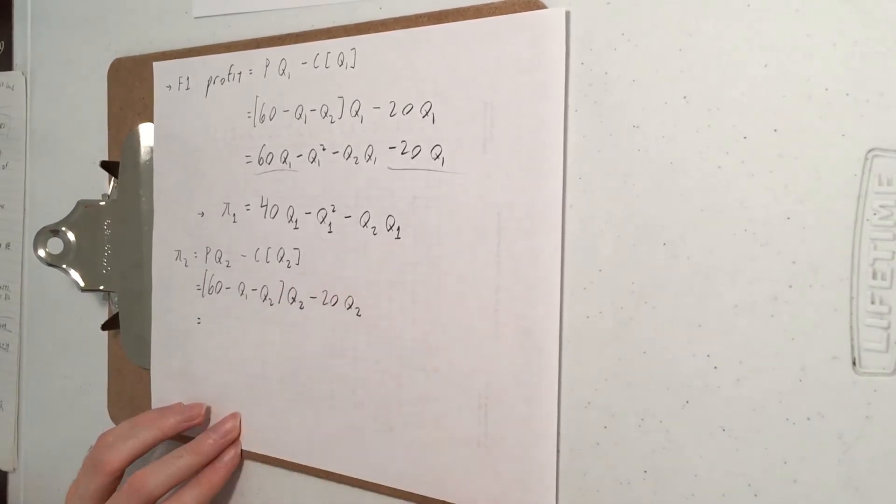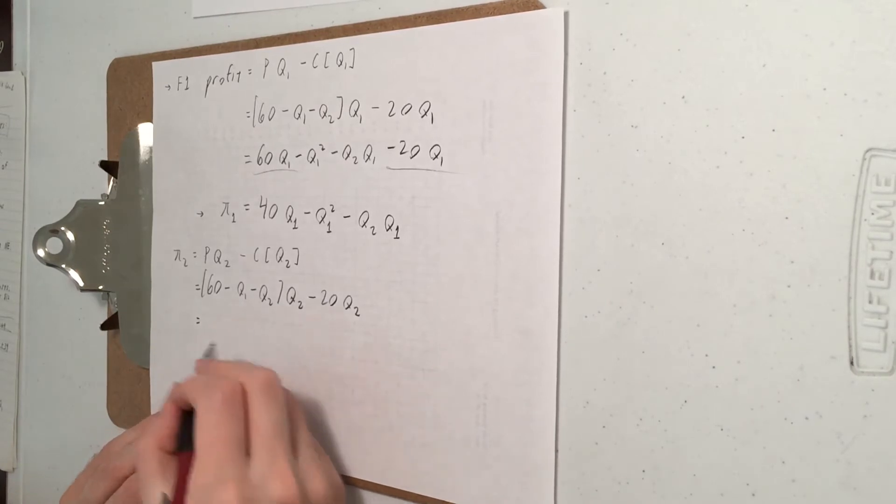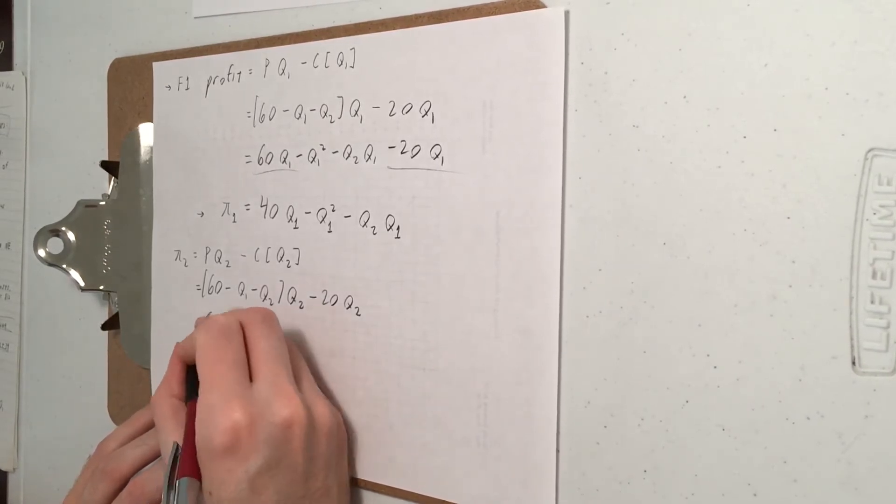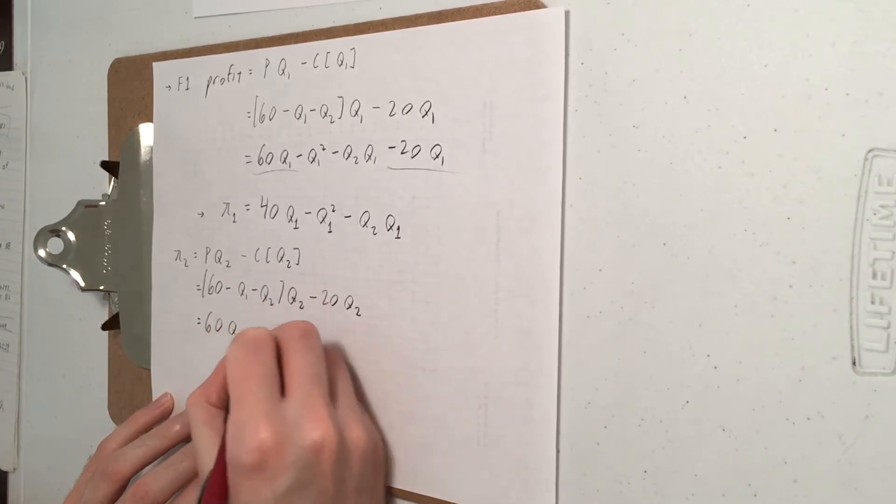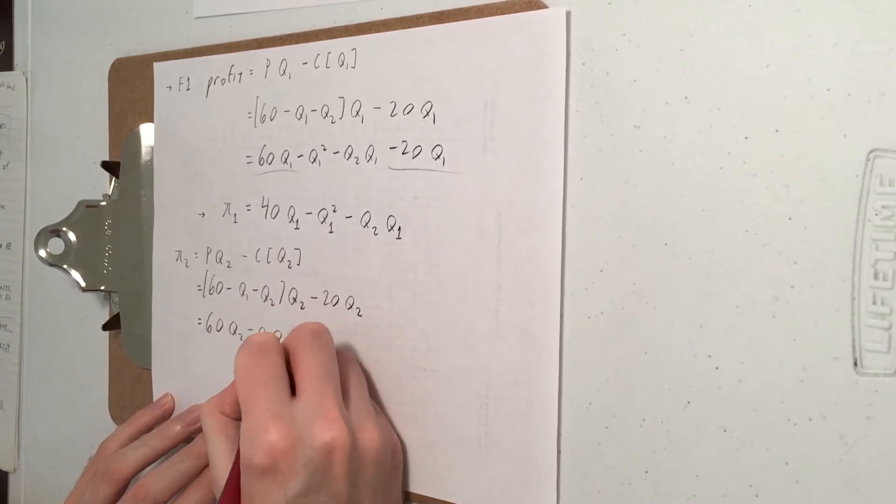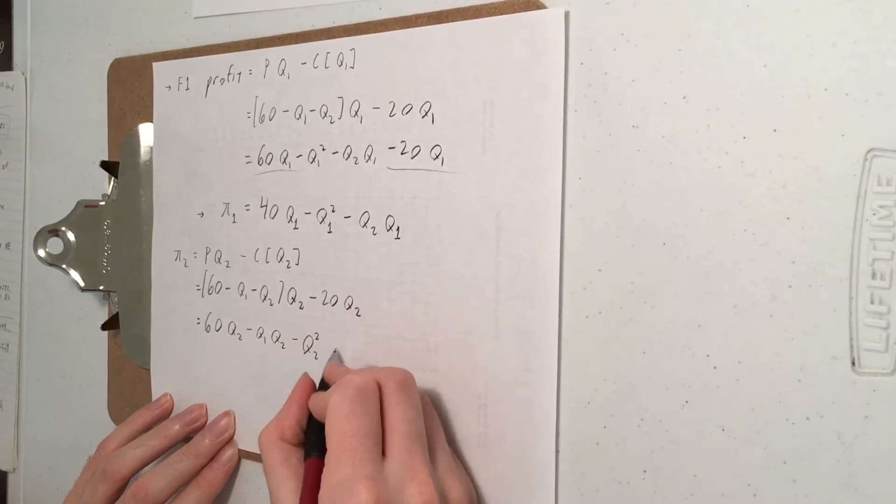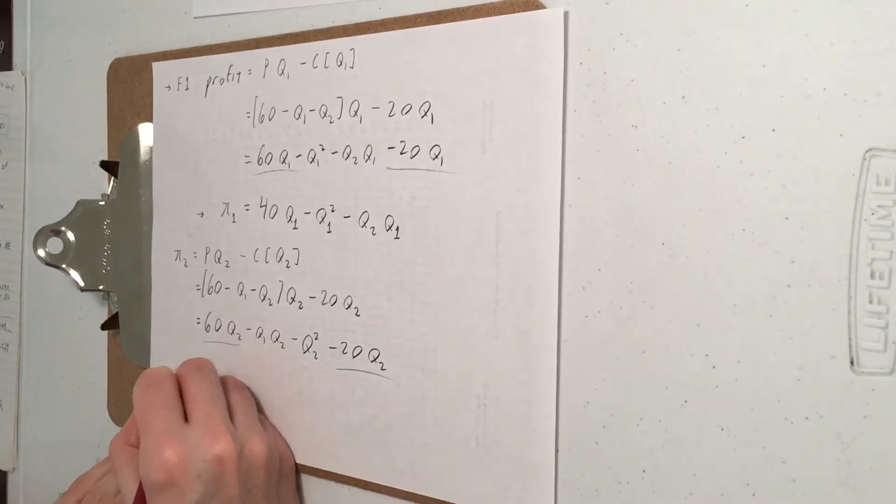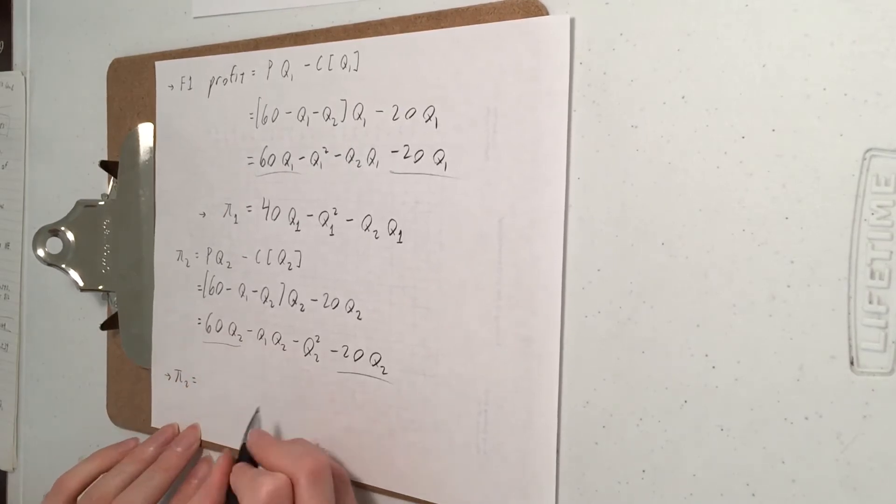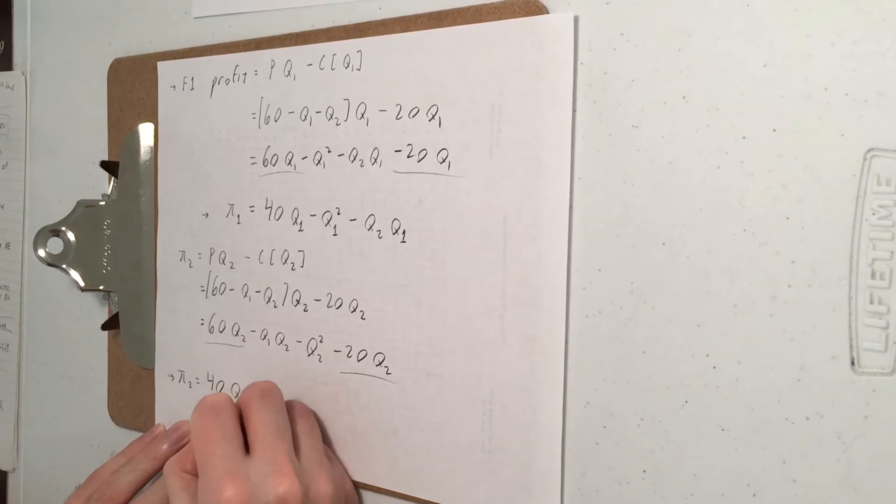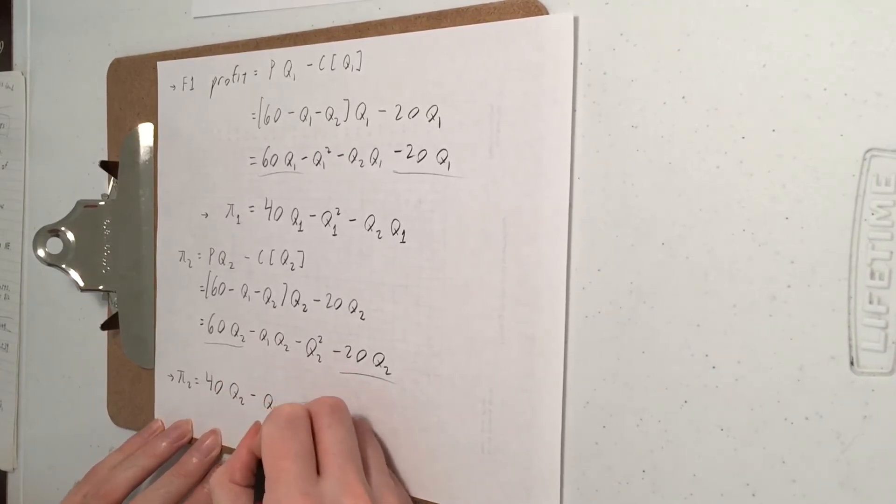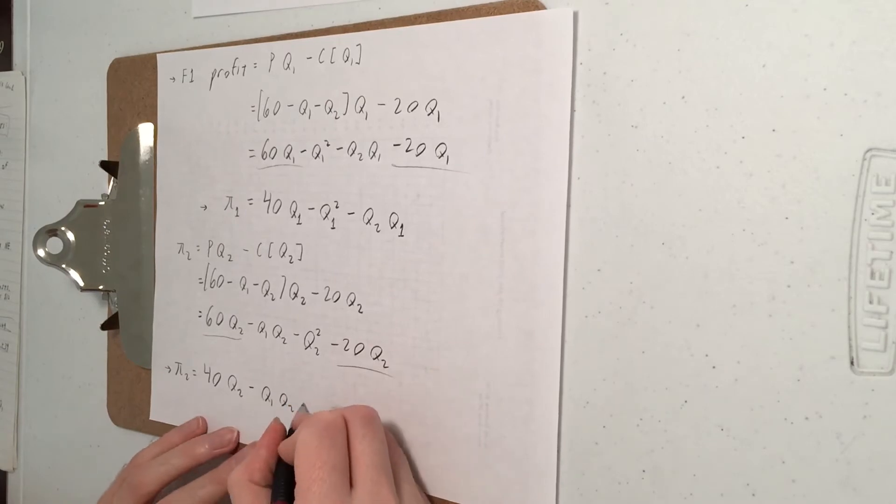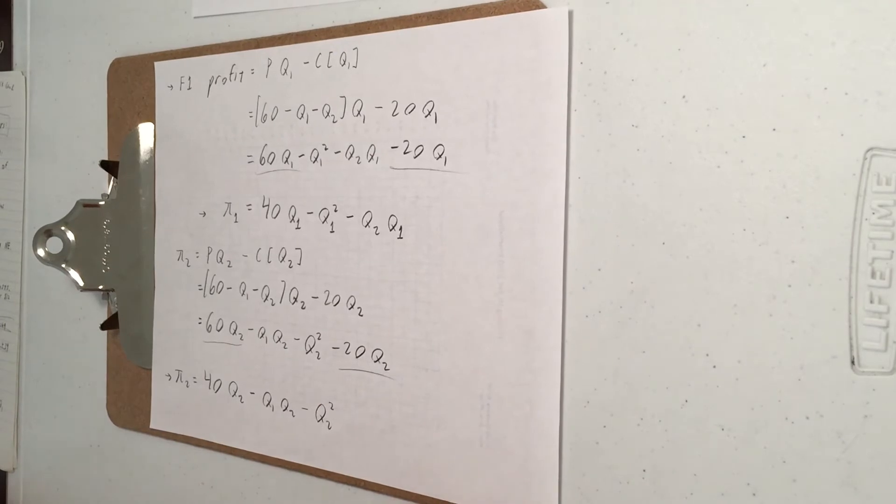Same procedure. I'll just distribute this Q2 through everyone in that parentheses. So 60Q2 minus Q1Q2 minus Q2 squared minus 20Q2. Combine these guys.